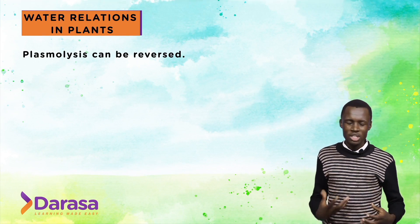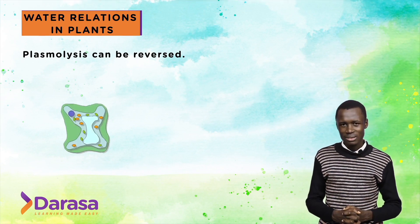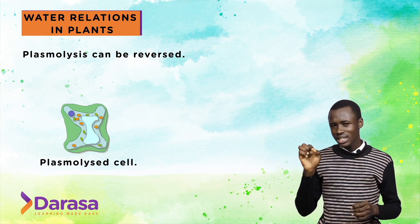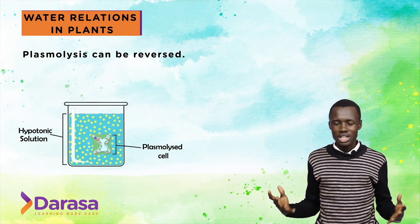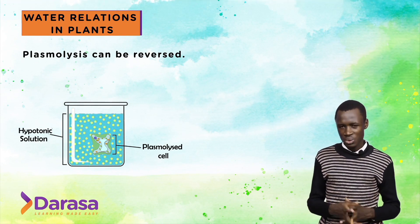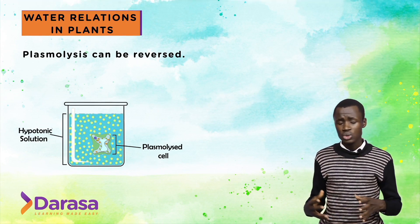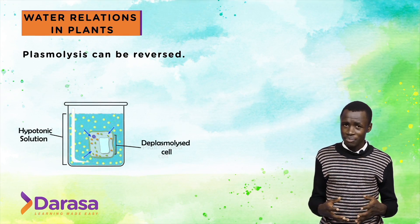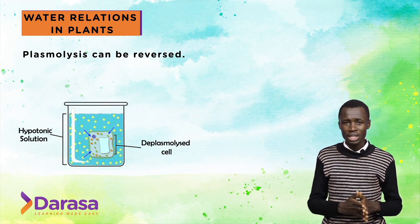Plasmolysis can be reversed. If you take a plasmolysed cell and place it in distilled water or a hypotonic solution, the plasmolysed cell has not died — it is very much alive. Osmosis will take place, whereby water is drawn from the hypotonic solution into the cell, because the concentration of the cell sap is now higher than the concentration of the distilled water.